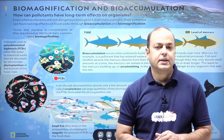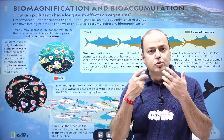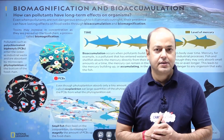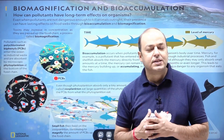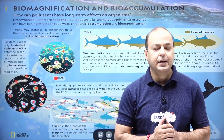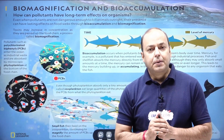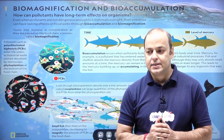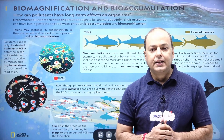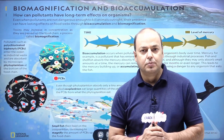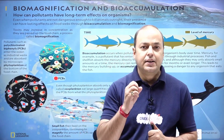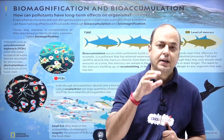What actually happens in bioaccumulation is that when we consume something, we have a proper system in our body — for example, kidneys. Whatever toxins are there, they get removed. If they are water soluble, they will be removed through the kidney. But in bioaccumulation, there are certain chemicals, certain materials that are not water soluble, and since they are not water soluble, they get accumulated inside an organism.